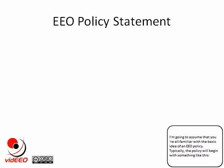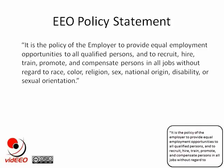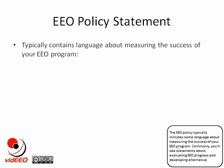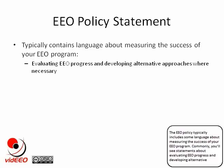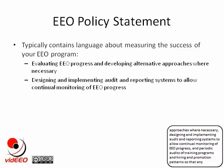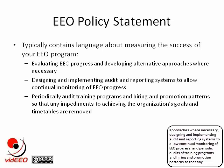I'm going to assume that you're all familiar with the basic idea of an EEO policy. Typically, the policy will begin with something like this: it's the policy of the employer to provide equal employment opportunities to all qualified persons and to recruit, hire, train, promote, and compensate persons in all jobs without regard to race, color, religion, sex, national origin, disability, or sexual orientation. The EEO policy typically includes some language about measuring the success of your EEO program.